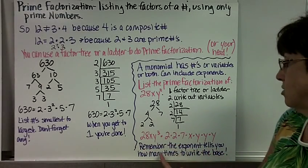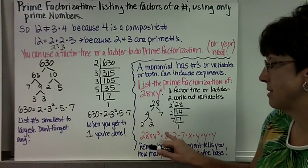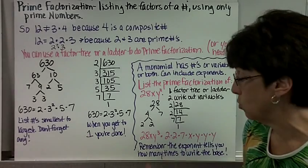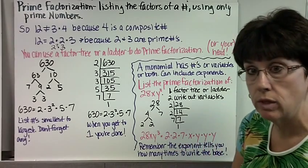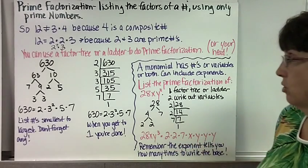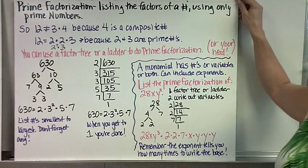Remember, the exponent tells you how many times to write down the base. The base is y in this case. So you have to write three of them. That's it for factoring with the monomials, so including the variables. Alright, let's do divisibility rules.